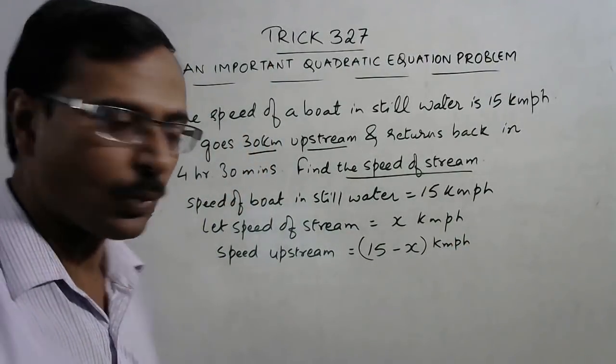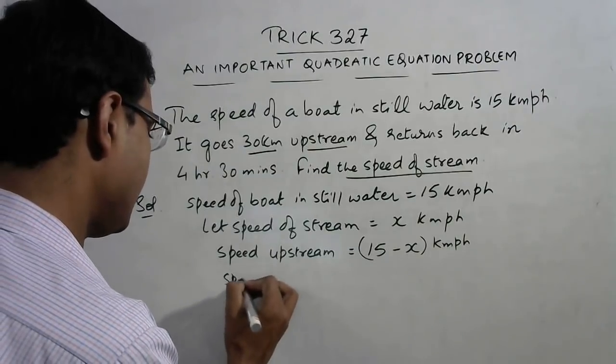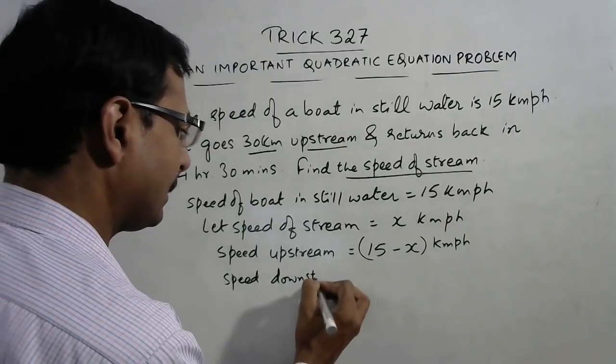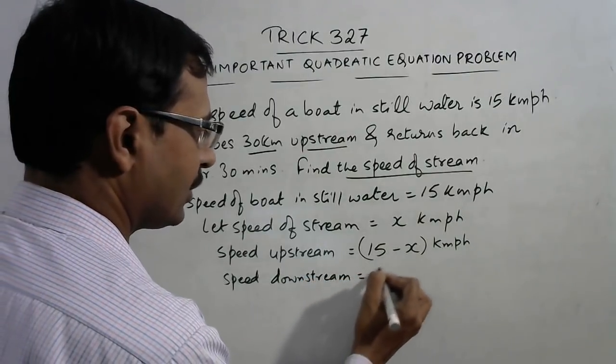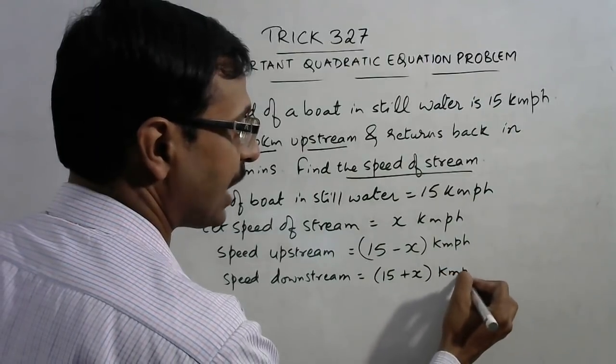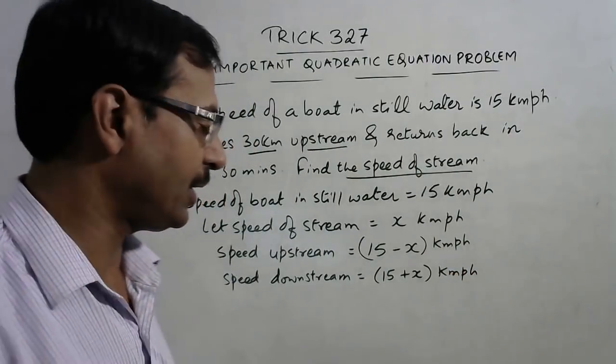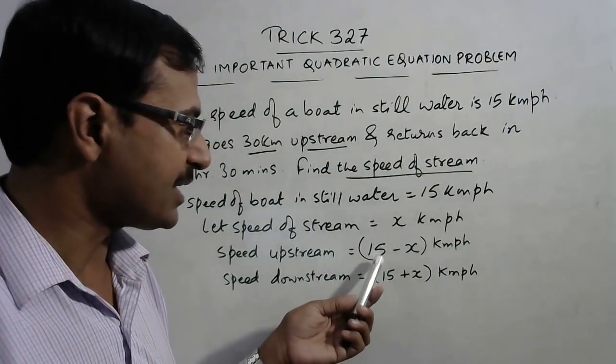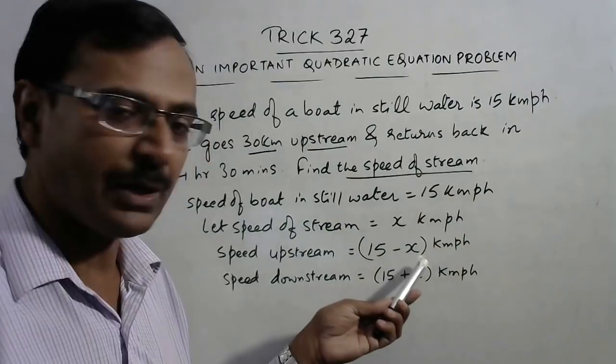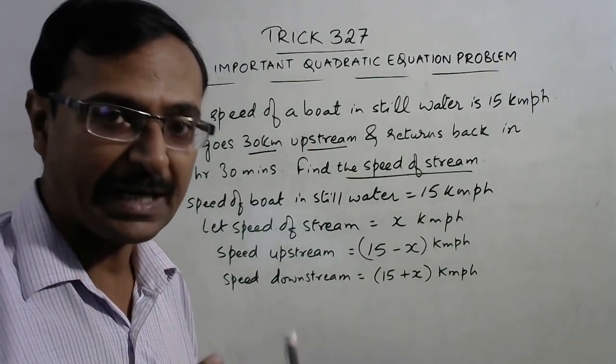Similarly when it is moving downstream, speed downstream is 15 plus x. When it moves up, up means against the flow of the river, then the speed reduces. Therefore speed of boat in still water minus the speed of stream, so the speed has reduced.